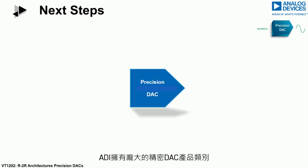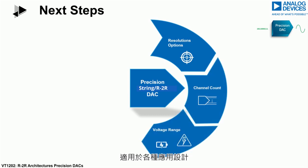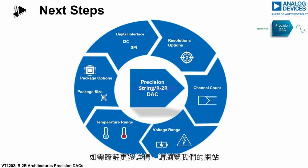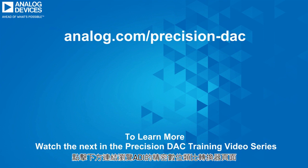Analog Devices has a large portfolio of precision DACs available in both string and R2R architectures, applicable to fit any application design. Please check out our website for more details. To learn more about precision DACs, continue to watch our next video in our DAC precision training series. Click on the link below or go to the Analog Devices Precision Digital-to-Analog Converter landing page.